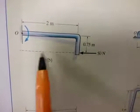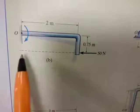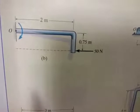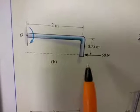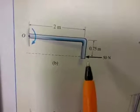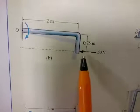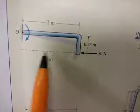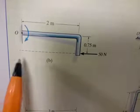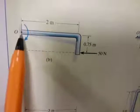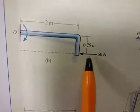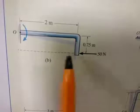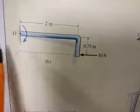Put your fingers in the direction of the force and curl them. Your thumb goes into the page and your fingers curl towards point O. This tells us the force causes the beam to rotate clockwise about point O.